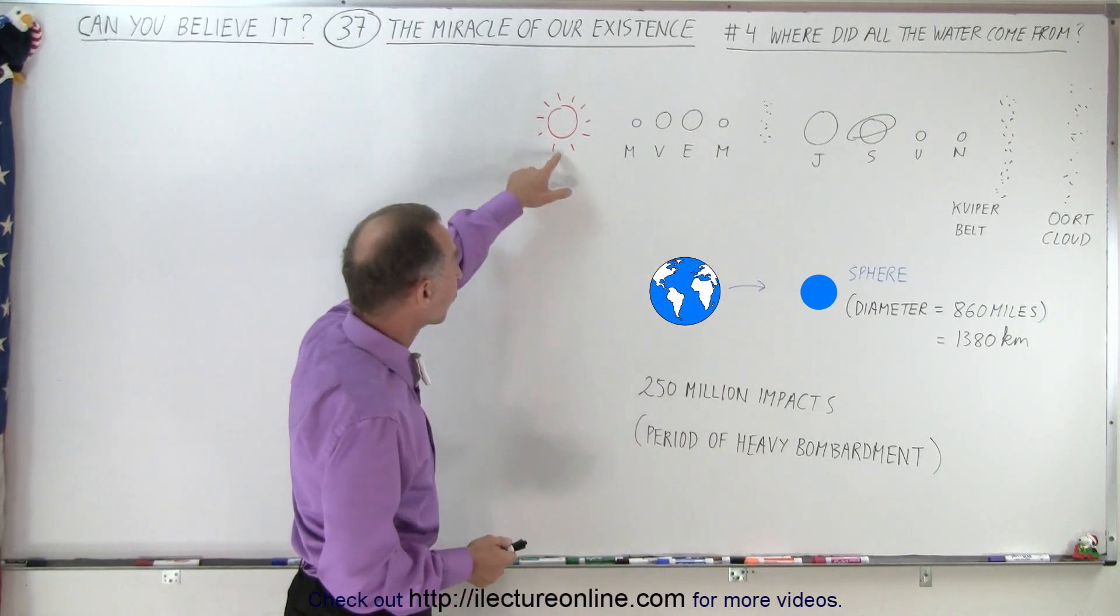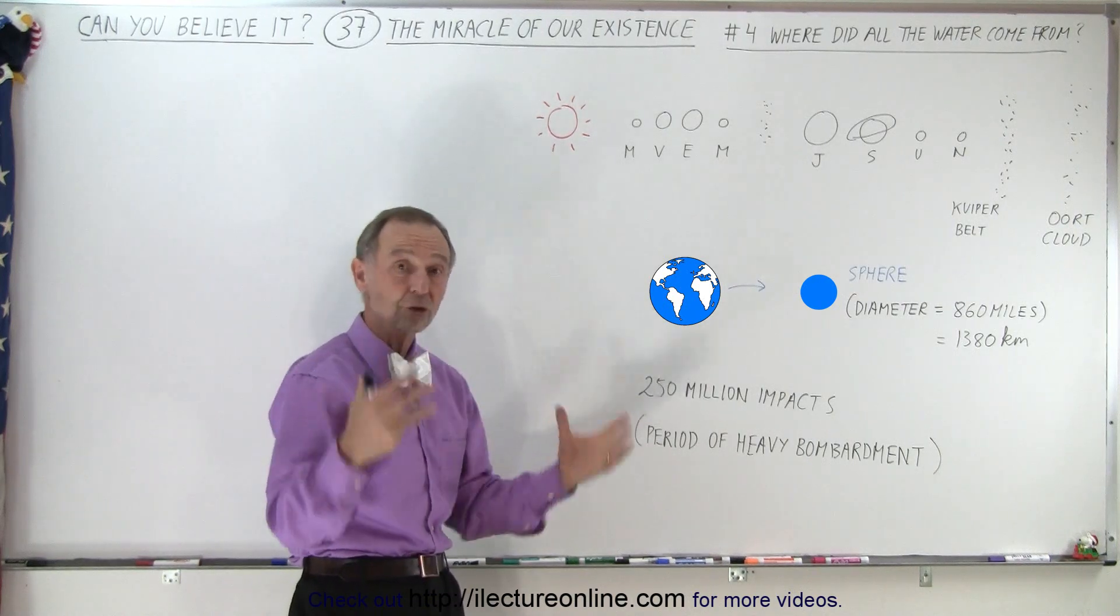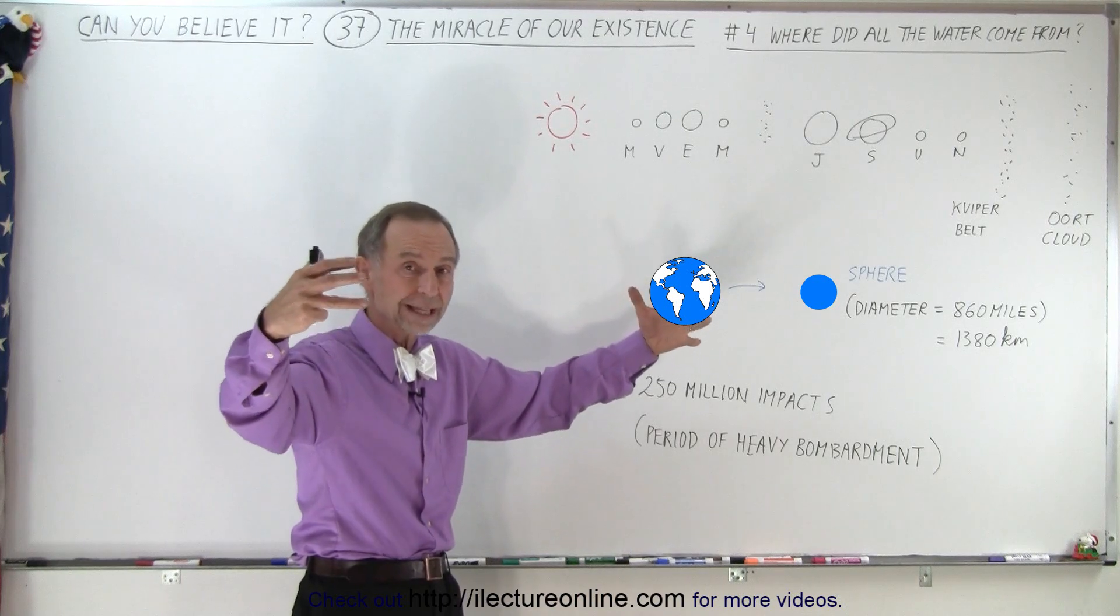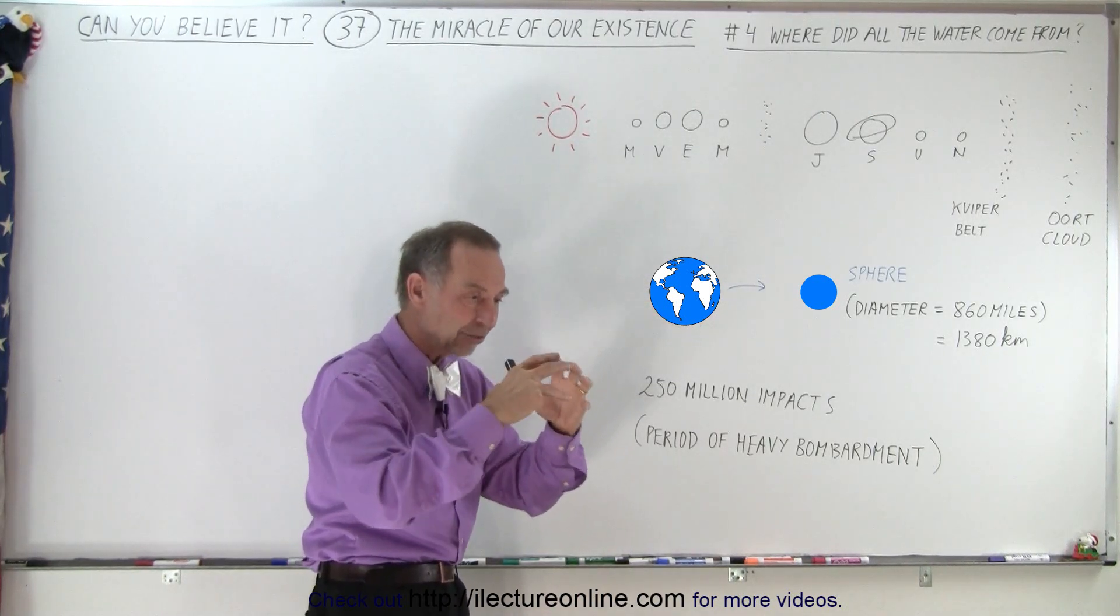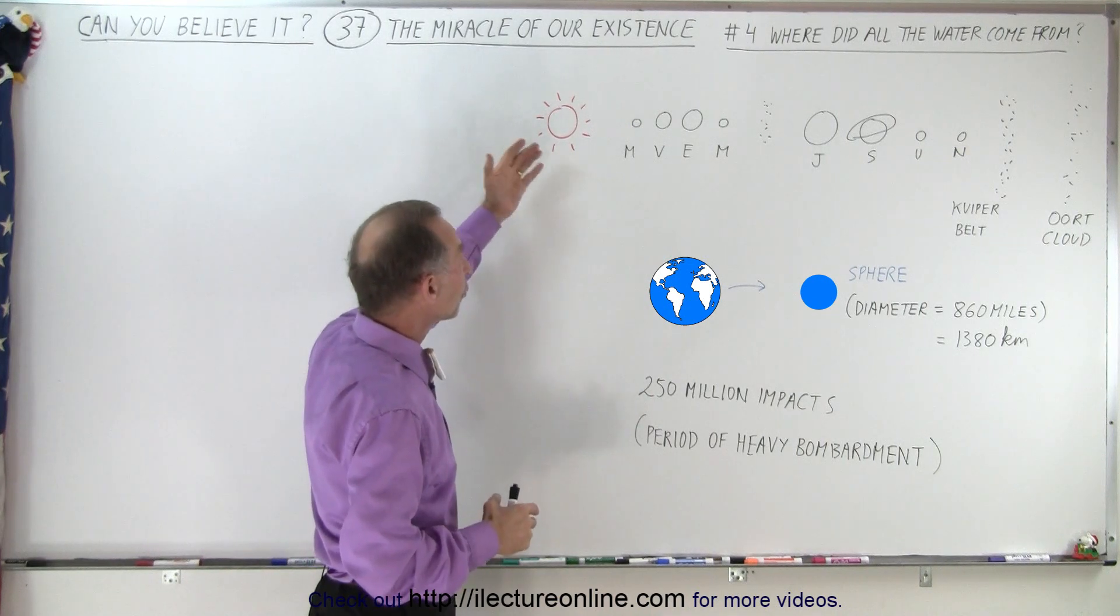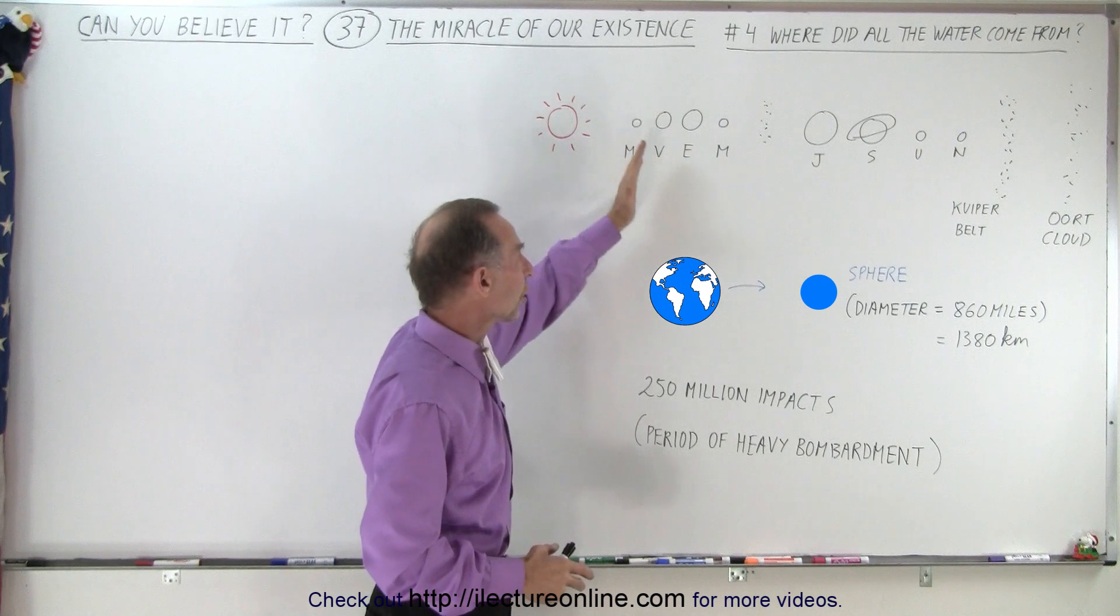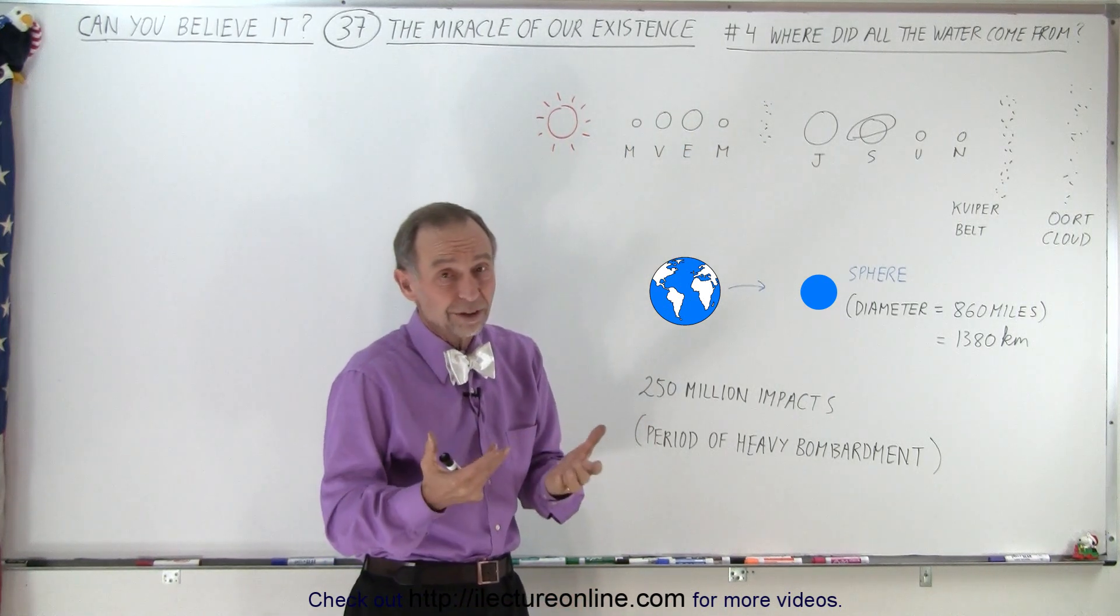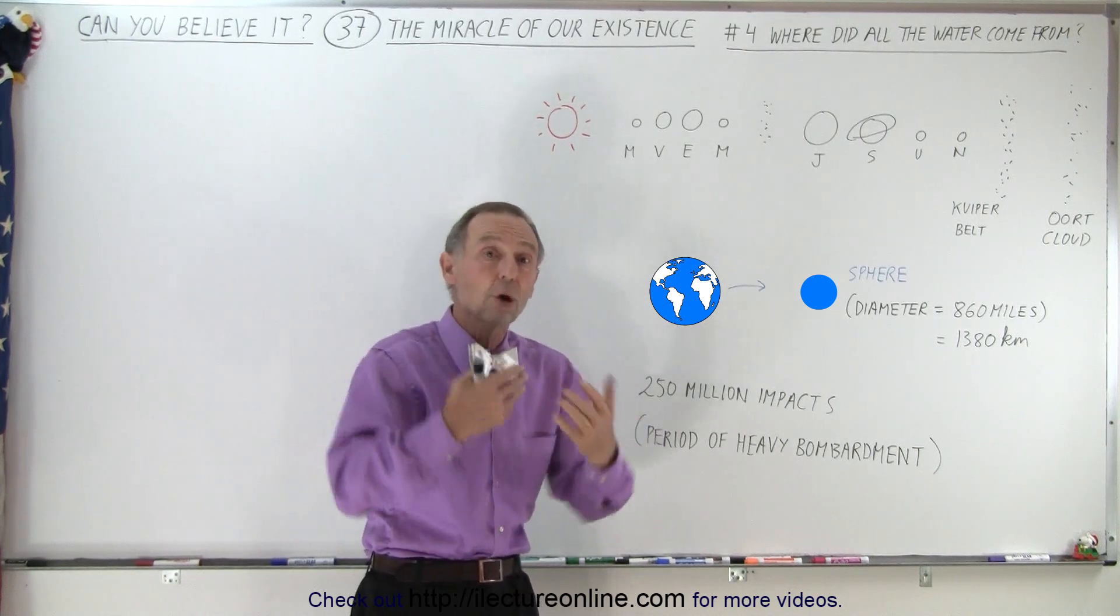Well it turns out as the Sun first formed and it was a protostar, it was a much larger star than it is today, because stars first, as they form, they're larger, then gravity causes them to shrink, and then radiation stabilizes their size. But during that early state, there was a lot of radiation coming from that protostar heating up the inner solar system.